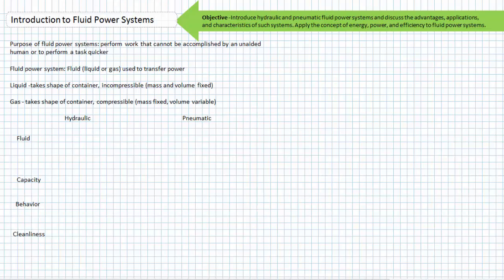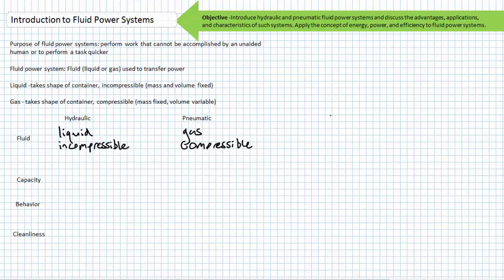A fluid power system is one in which a fluid — either a liquid or a gas — in contrast to electrical or mechanical means, is used to transmit power from one location to another. Fluid power systems come in two notable forms: fluid power systems using liquid are called hydraulic systems, and fluid power systems using gas are called pneumatic systems.